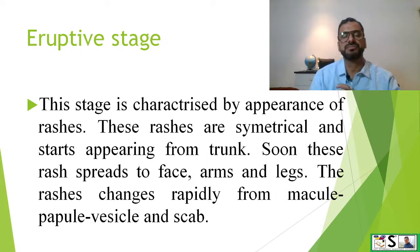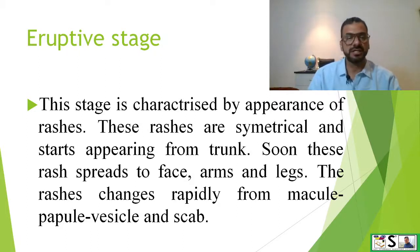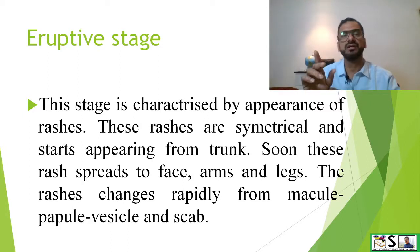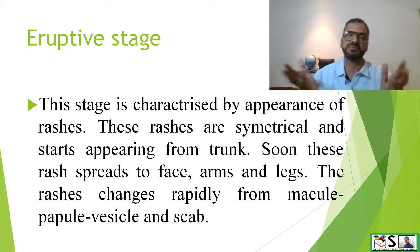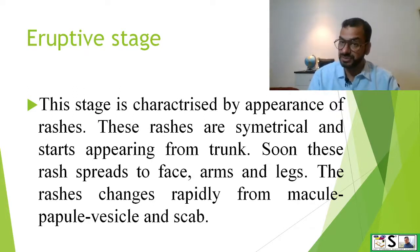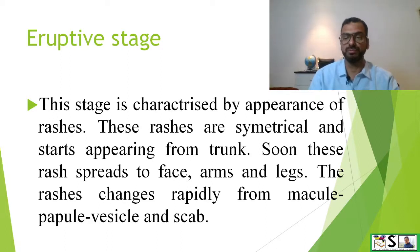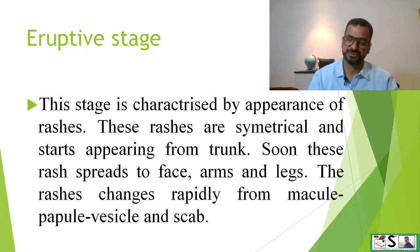Then the eruptive stage starts. The eruptive stage means appearance or eruption of rashes. This stage is characterized by symmetrical rashes — this is a special feature that clearly differentiates chickenpox rashes from measles rashes, which are asymmetrical. The rashes start appearing from the trunk, then spread to the face, arms, and legs. The rashes change rapidly from macules to papules, then vesicles, and finally to scabbing or scabs.